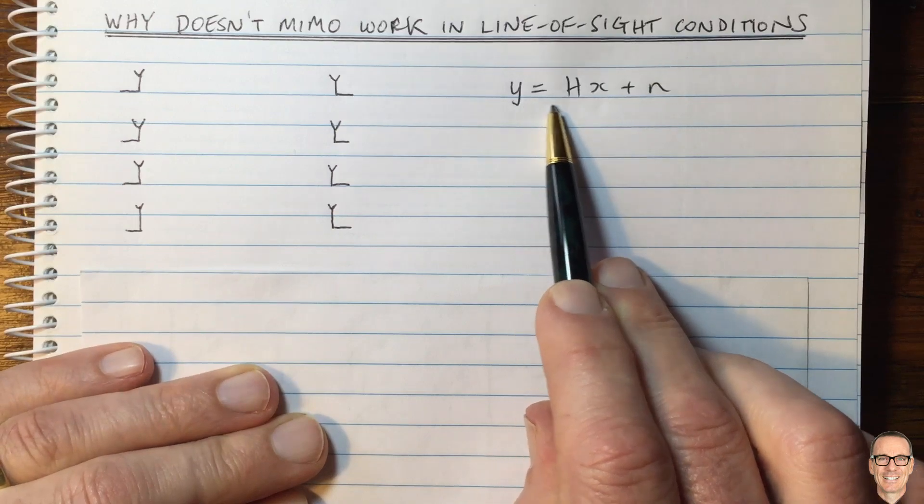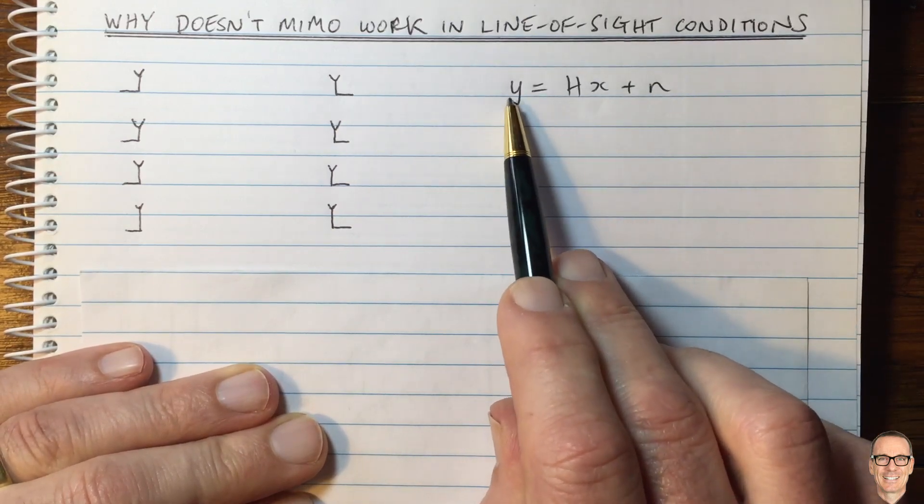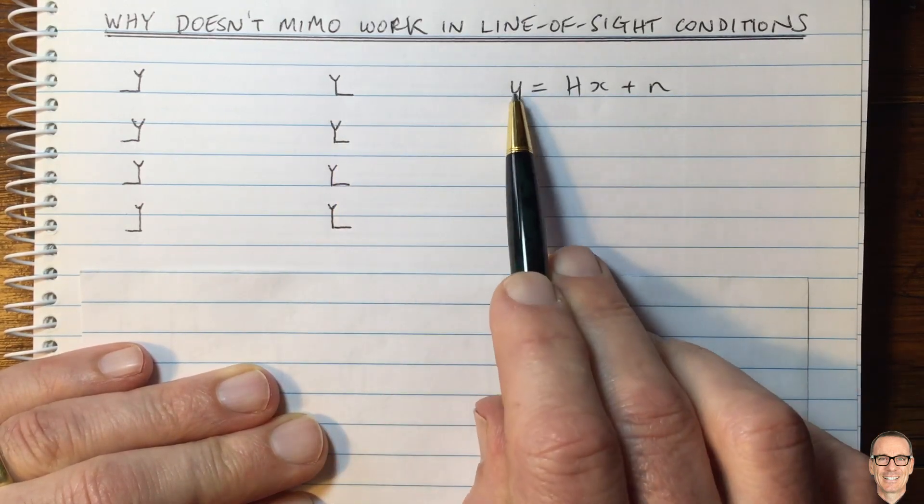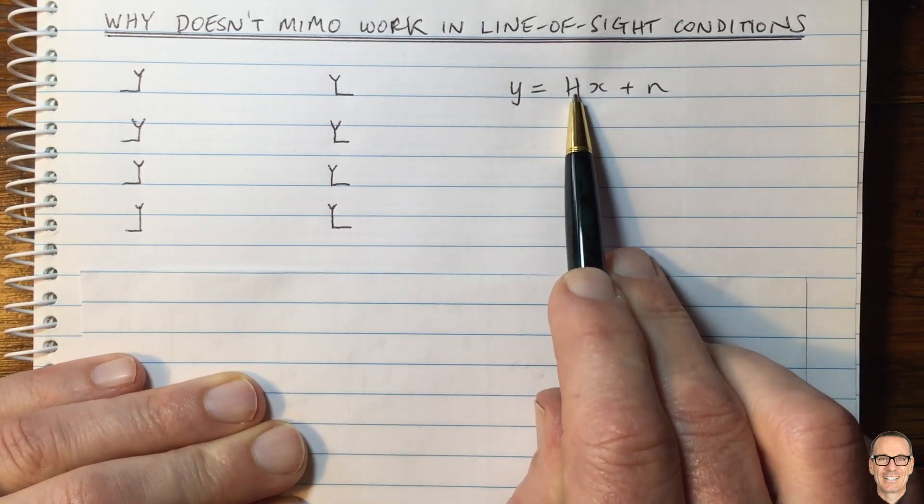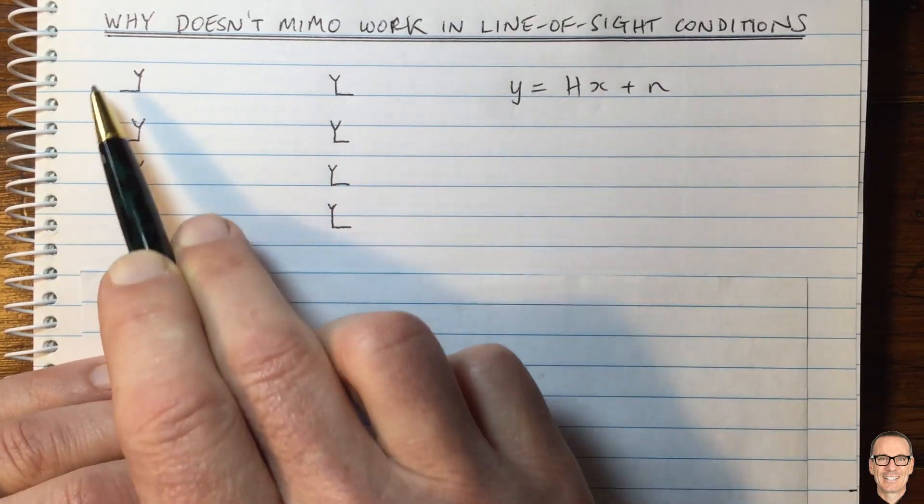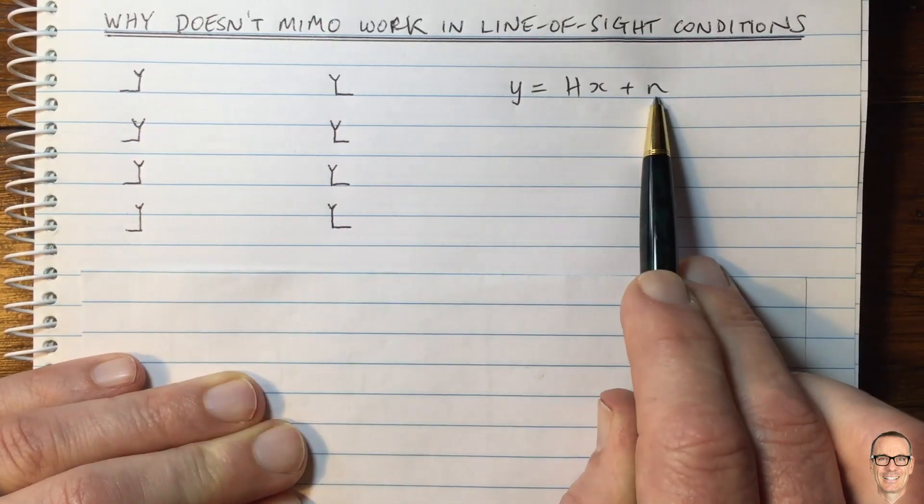We can write an equation that represents this, where the measurements at the receiver are a vector, which equals the matrix from the channel times the vector of input symbols, plus the noise.